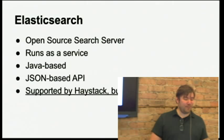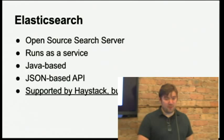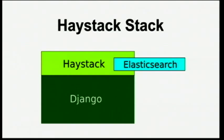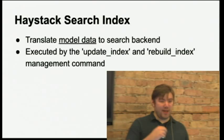Haystack supports Elasticsearch but it doesn't support document search out of the box. There's no means to go in and search the contents of uploaded documents, which would be nice — that's why I'm doing this talk. Haystack is an abstraction on top of Django with forms and query sets for doing search. It has something called a search index, which is basically how you define a mapping between your Django models and the search backend.